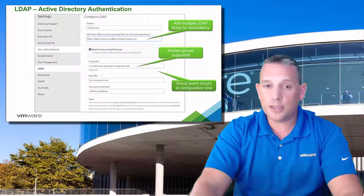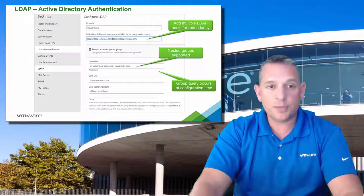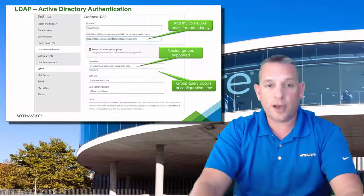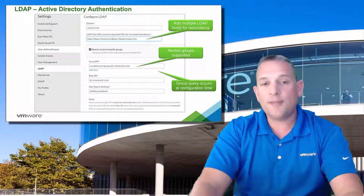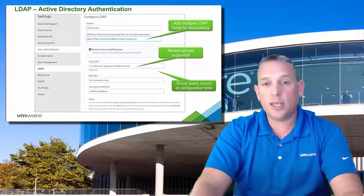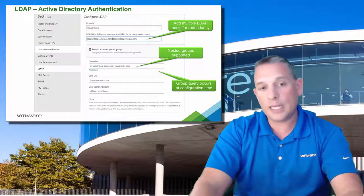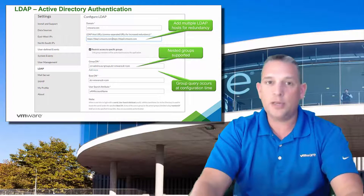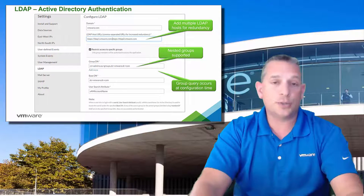In regards to Active Directory authentication, we've provided the ability to point to multiple Active Directory domain controllers for redundancy purposes. VRealize Network Insight will use round-robin to authenticate between the different domain controllers entered into the interface. We've also added the ability to authenticate AD groups as well as any nested subgroups. This AD group query is only done at configuration time, not every time a user authenticates, so it avoids causing extra authentication traffic against your domain controllers.